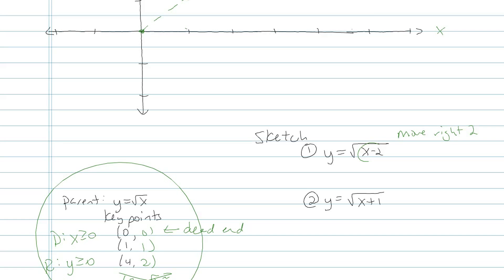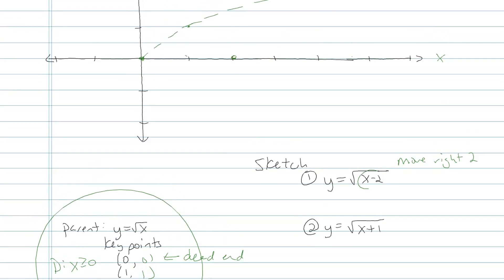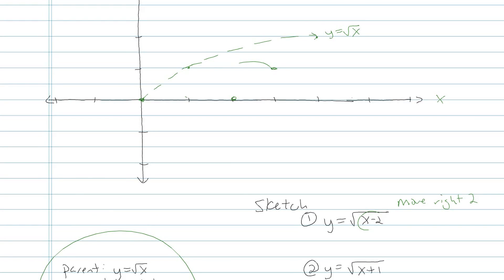Minus 2 inside the function tells us move or shift right 2. So every single one of these points in my parent is going to move 2 to the right. So here it is. This is my shifted graph now. This is square root of x minus 2.